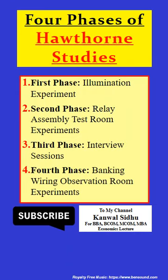These are the four phases of Hawthorne studies. The first phase is known as the illumination experiment. The second phase is the relay assembly test room experiment. The third phase is the interview session, in which more than 20,000 employees were interviewed. And the fourth experiment is known as the banking wiring observation room experiments.